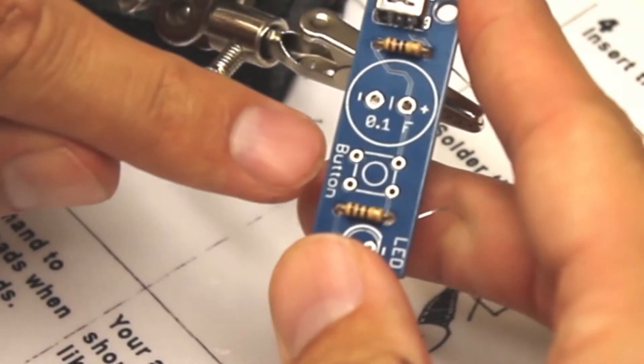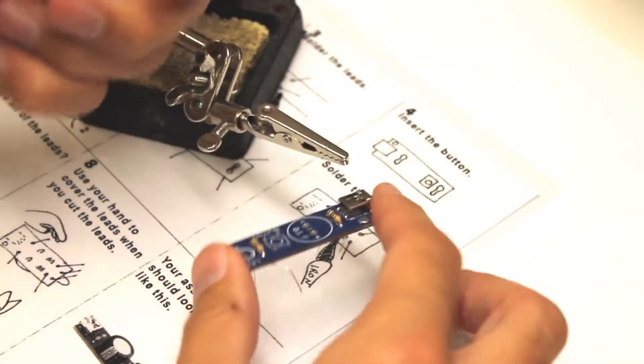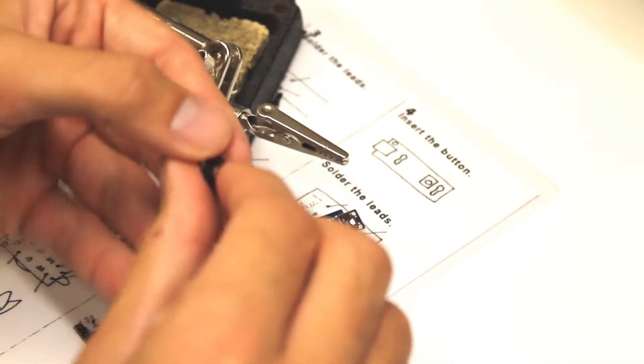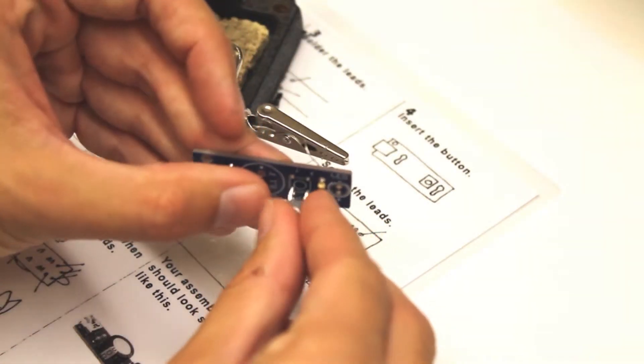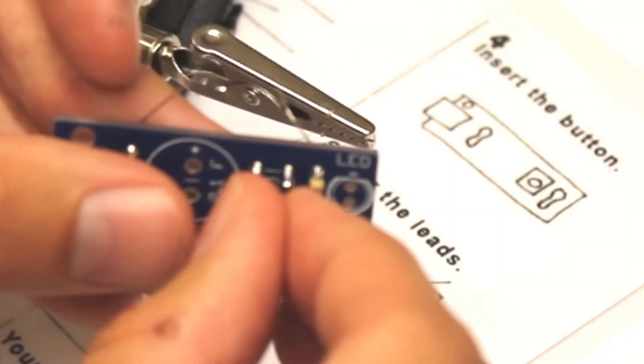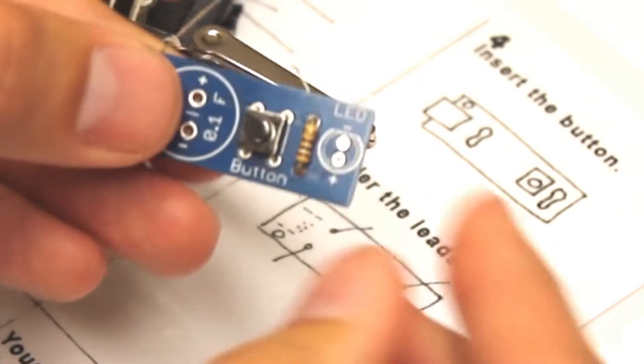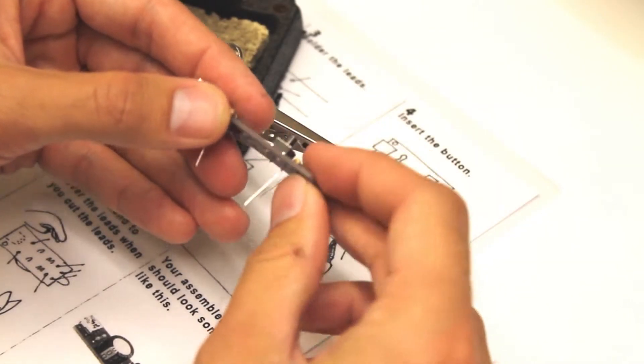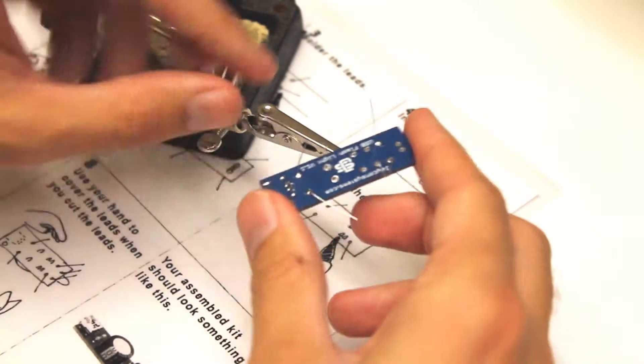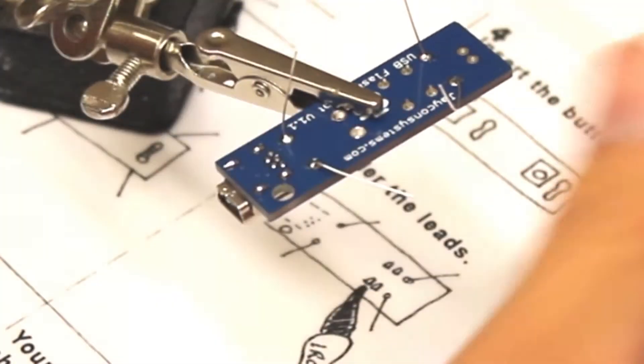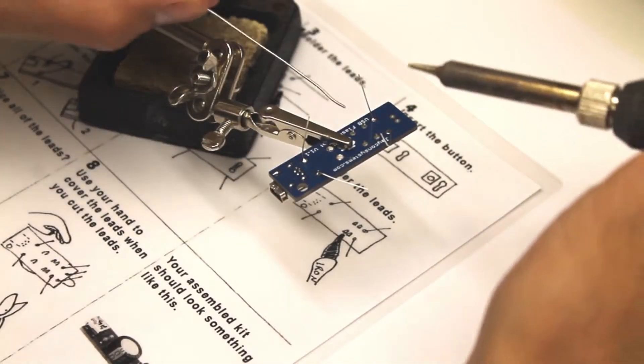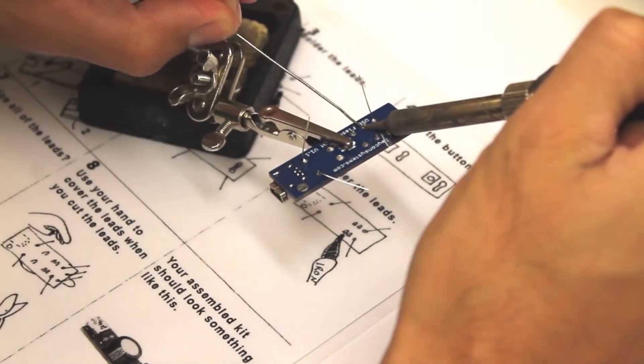Next we're going to solder the button. Go ahead and locate the button and insert the button into the four holes. Apply some pressure. Make sure not to bend the pins. Apply solder on all four pins.